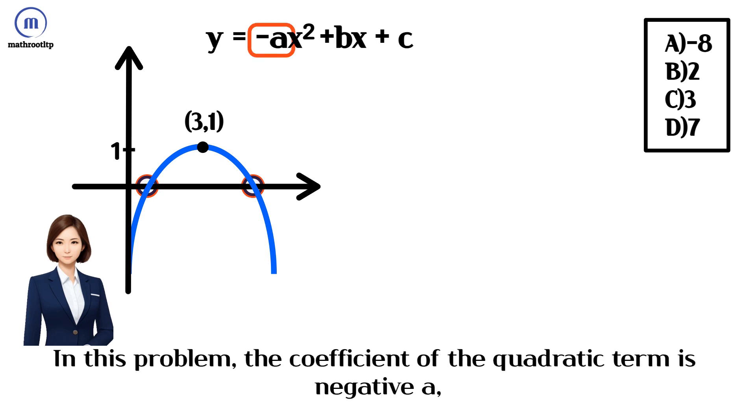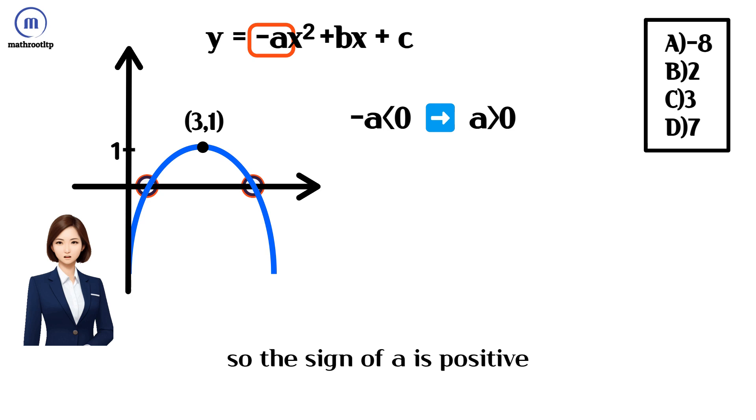In this problem, the coefficient of the quadratic term is negative a. So the sign of a is positive.